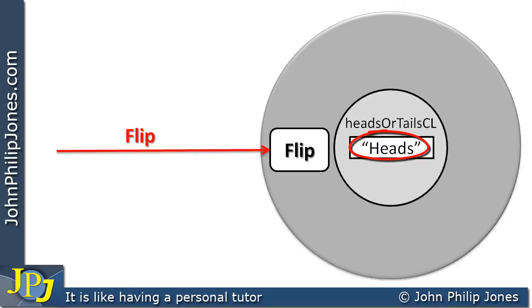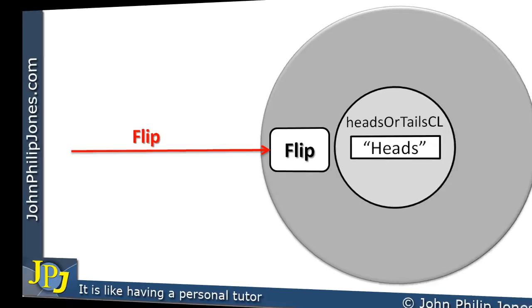Of course we also wanted to be able to put the string "tails" in the center. In other words, flip will flip the coin and will produce at the center of the object either "heads" or "tails", and we obviously want this to happen at random.